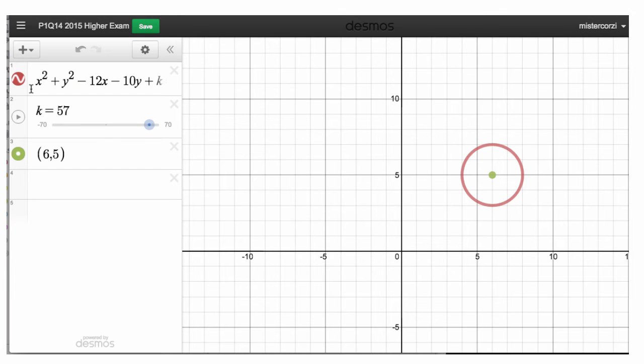So here we have x squared plus y squared minus 12x minus 10y plus k equals 0. I've got k as 57. That's what it looks like. There's the centre, 6, 5. And let's decrease the value of k. But remember, what we're looking for is the number of points of intersection of this circle with the y-axis and the x-axis. At present, there are no points of intersection.